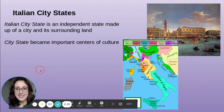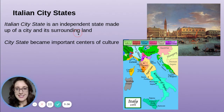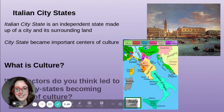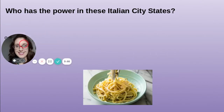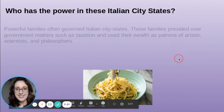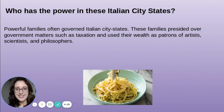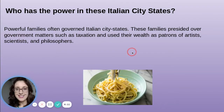Italian city-states are independent states made up of a city and its surrounding land. City-states became important centers of culture. What is culture? What factors led these city-states to become centers of culture? Powerful families often governed Italian city-states, presiding over government matters such as taxation and using their wealth as patrons of the arts, sciences, and philosophers.